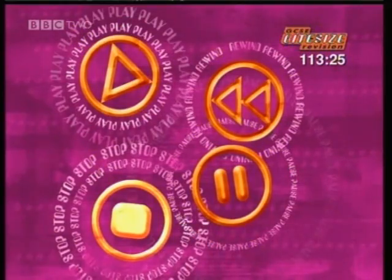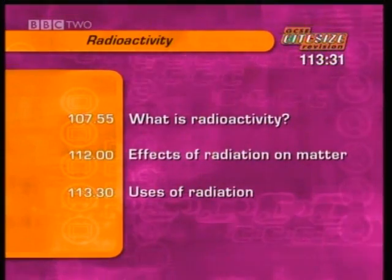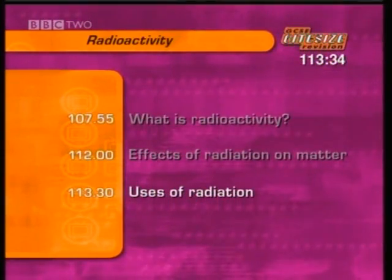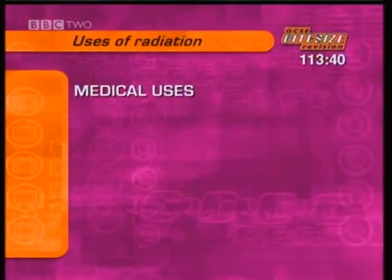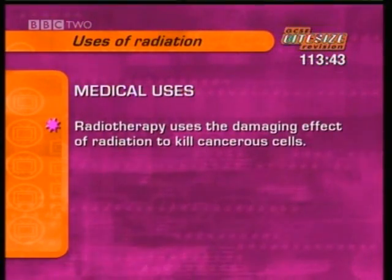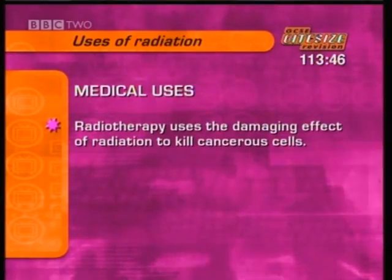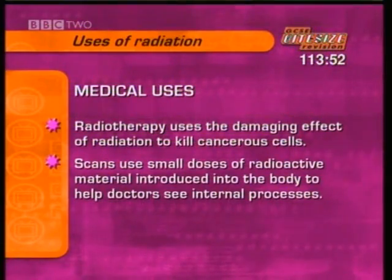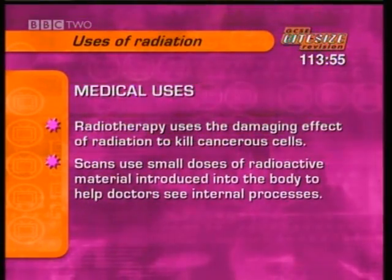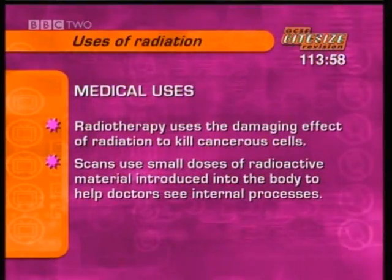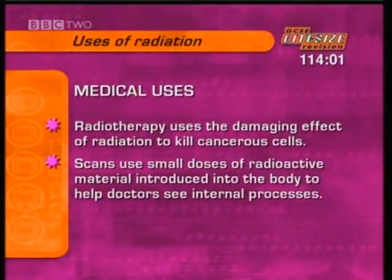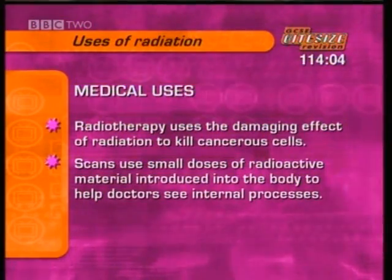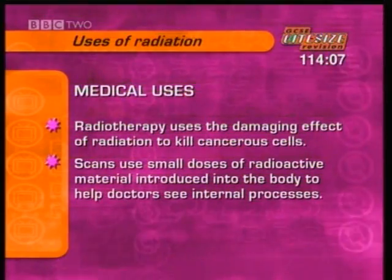That's it for the effects of radiation on matter. Next, some practical uses of radiation. There are several medical uses for radioactivity. Radiotherapy uses the damaging effects of radiation to kill cancerous cells while leaving healthy cells unharmed. Some scans make use of small doses of radioactive material introduced into the body to help doctors see what's going on. The next clip shows what's involved — notice the safety precautions that have to be taken when handling radioactive materials.